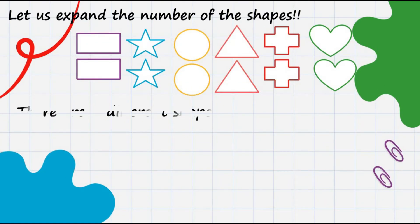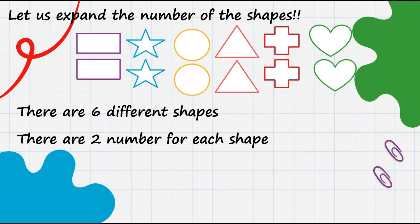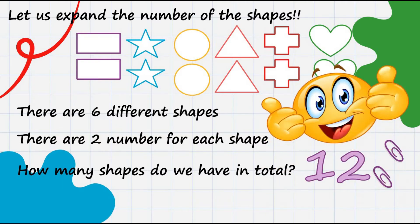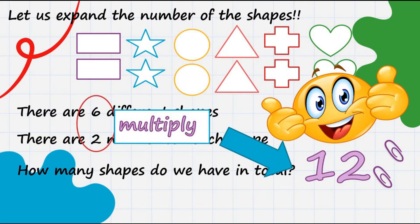Now, remember the following. There are 6 different shapes. There are 2 numbers for each shape. The question is, how many shapes do we have in total? Yes, it's 12. Very good. But how did we get it? We multiply 6 and 2 to get the value of 12.